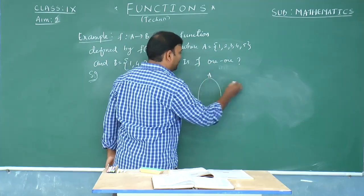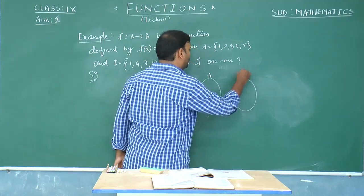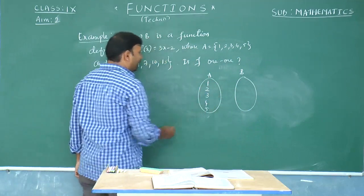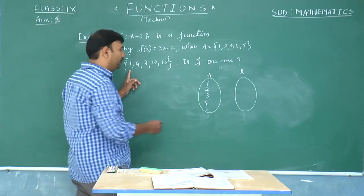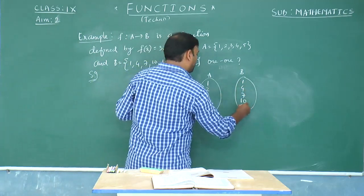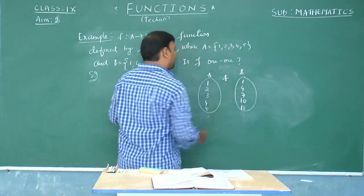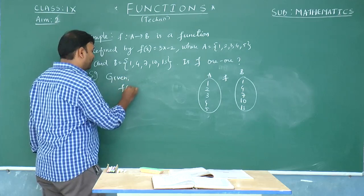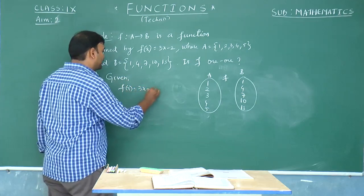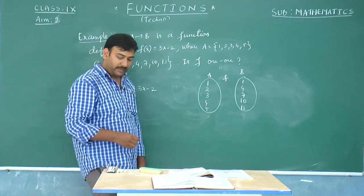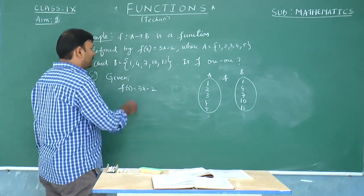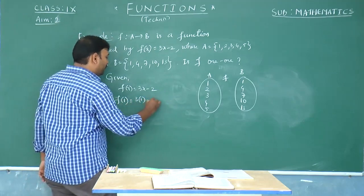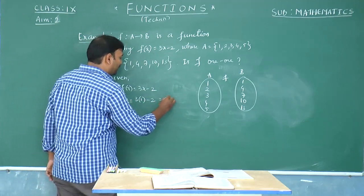The domain contains elements 1, 2, 3, 4, 5 and the codomain contains 1, 4, 7, 10, 13. The function is f(x) = 3x − 2. Finding the image of each element: f(1) = 3(1) − 2 = 3 − 2 = 1. So the image of 1 is 1. The image of 2 is f(2) = 3(2) − 2 = 6 − 2 = 4.